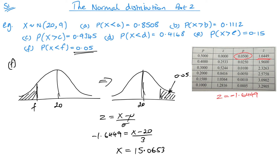Using the percentage points table isn't a necessity — you can get all these answers from the main table. But if you need to find z and you have a nice probability, looking it up in this table is much quicker. Just remember that when looking it up, it's a greater-than probability, not less than — so be careful with that.